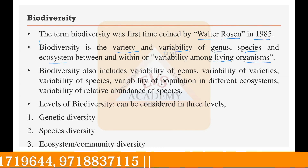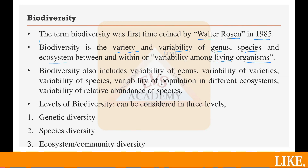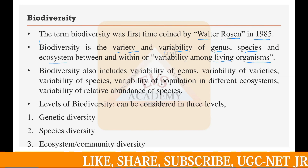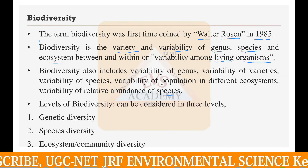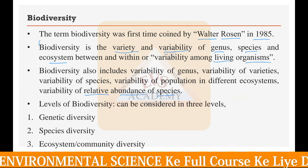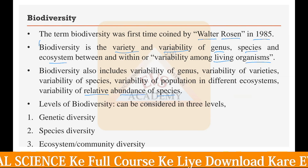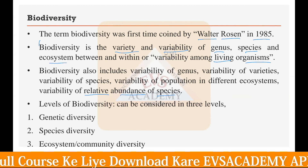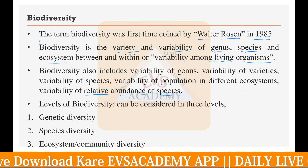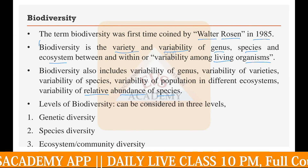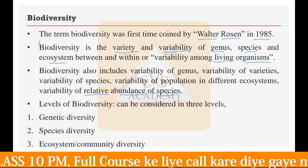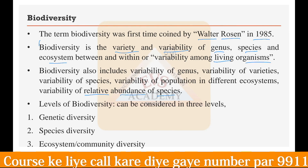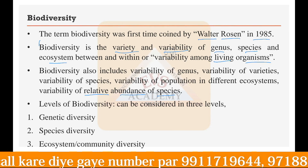Biodiversity also includes variability of genus, variability of varieties, variability of species, variability of population across different ecosystems, and variability of the relative abundance of species. Relative abundance means one species is higher in number compared to another species in the same environment — more availability relative to other species. If all these things are higher, biodiversity is higher; if these things are lower, biodiversity is lower.